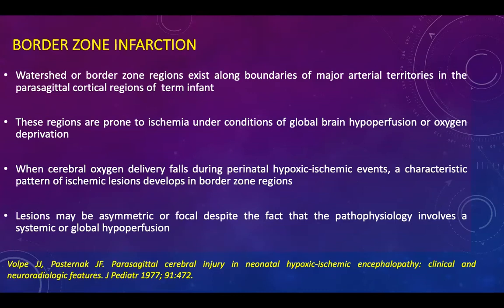Border zone infarction occurs in the watershed or border zone along the boundaries of major arterial territories in the parasagittal cortical regions. These regions are prone to ischemia under conditions of global brain hypoperfusion or oxygen deprivation. When cerebral oxygen delivery falls, a characteristic pattern of ischemic lesions develops in the border zone regions, and lesions may be asymmetric or focal.